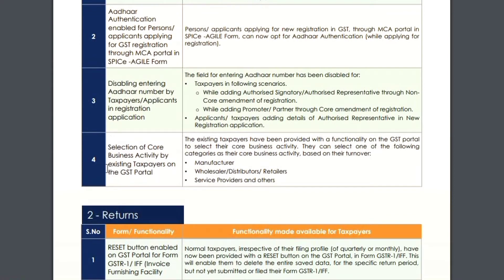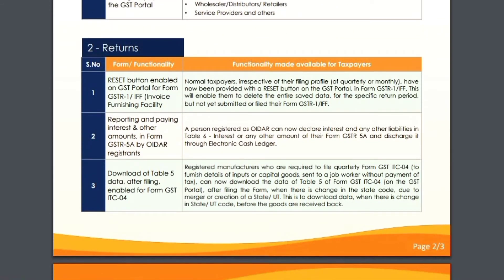Moving ahead, we will discuss number two prospect: returns. Regarding changes in returns on the GST portal, there are three major points. Number one is the reset button, which has been enabled on the GST portal for GSTR-1 or IFF. It says that all normal taxpayers, irrespective of their filing profiles, have been provided with a reset button on the GST portal under GSTR-1 or IFF. This will enable them to delete data that has been saved — but if you have already submitted or filed it, the reset button will not work.